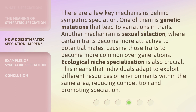There are a few key mechanisms behind Sympatric Speciation. One of them is genetic mutations that lead to variations in traits. Another mechanism is sexual selection, where certain traits become more attractive to potential mates, causing those traits to become more common over generations.